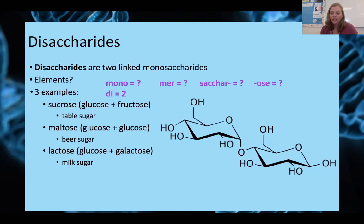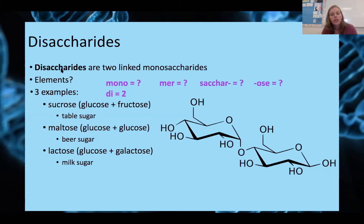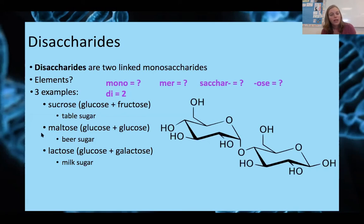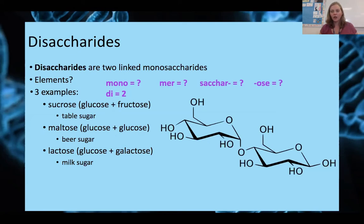We can link monosaccharides together using dehydration synthesis — taking that water molecule out to put them together. 'Di' means two, 'saccharide' means sugar, so disaccharides are two sugars or two linked monosaccharides. The elements are still the same: carbons, hydrogens, and oxygens. Three examples of disaccharides are sucrose (table sugar), maltose (beer sugar), and lactose (milk sugar). You can see how different monosaccharides are put together to get these disaccharides.